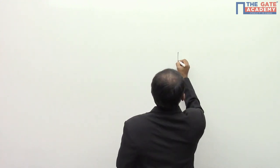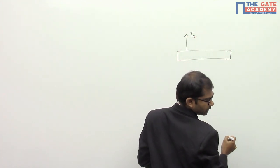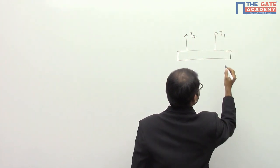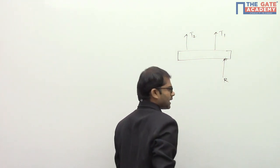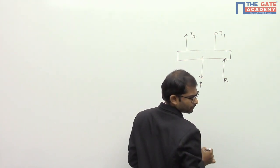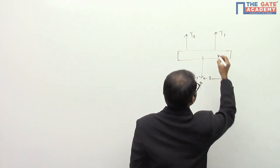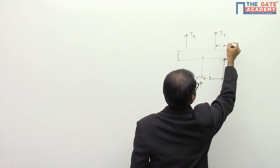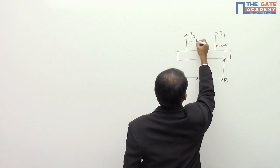Let's take the free body diagram of this particular loading case and write down the equations of static equilibrium. The rigid bar is experiencing tension T2 at one point and tension T1 at another. At the corner point there is a reaction R, and at the center there is load P. The dimensions are: L and L for the two spans, and a and b for the wire positions.